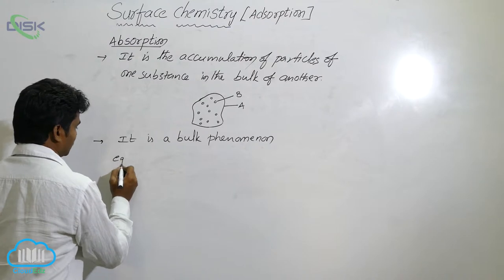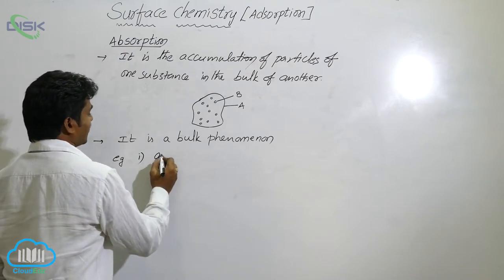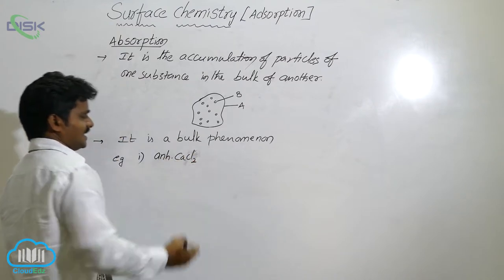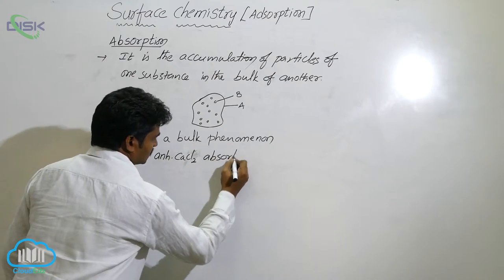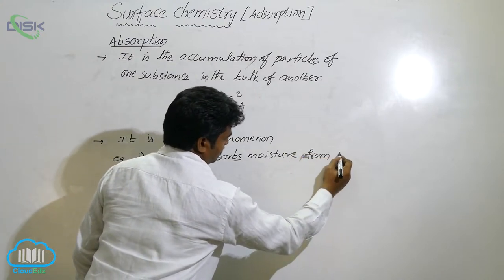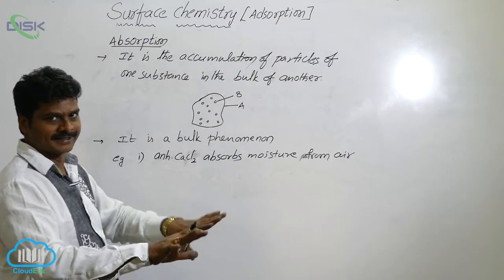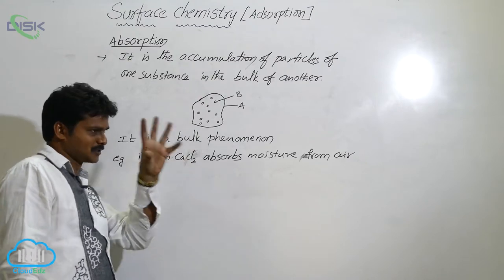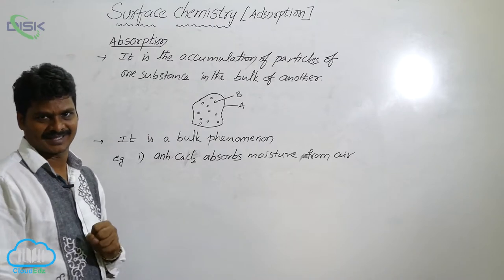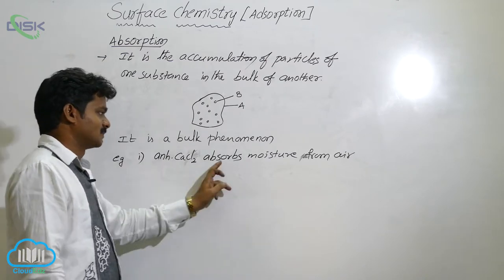Let us see some examples for absorption. The first one: anhydrous calcium chloride (CaCl₂) absorbs moisture from air. When you place anhydrous calcium chloride in your room, it simply decreases the humidity in that room because it absorbs moisture. Whereas silica gel or alumina gel adsorbs moisture — that is adsorption. Anhydrous calcium chloride absorbs moisture from air.